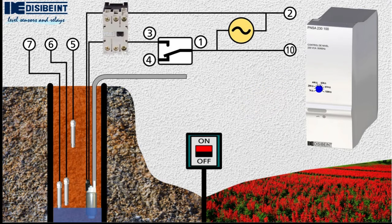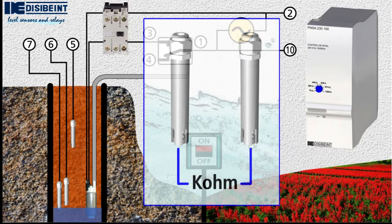The operation of level relays is based on the conductivity of the liquid they are controlling. They measure the resistivity between the probes and act on a relay depending on the presence or lack of liquid.